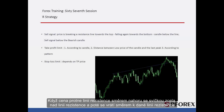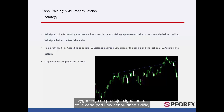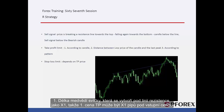Sell signal: When a price crosses the resistance line towards the top, with complete candles over the resistance line, and then returns to that resistance line — if price passes the resistance line towards the bottom and the close price of a candle forms under this line, then a sell signal is generated after price goes lower than the low price of that candle. The first TP price can be X1 pips lower than the entry price, where X1 equals the length of the bearish candle that forms below the resistance line.